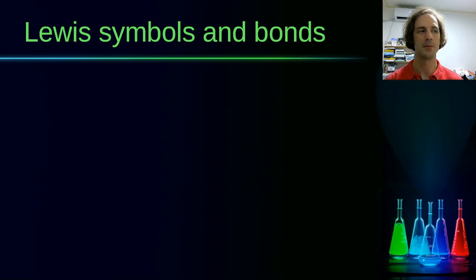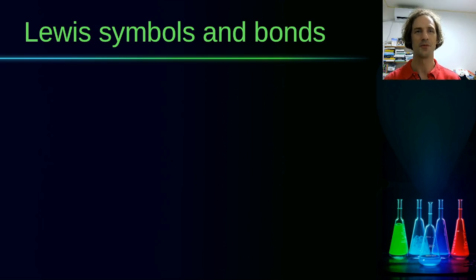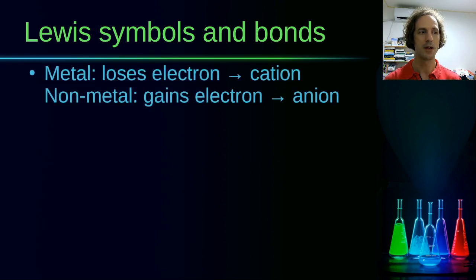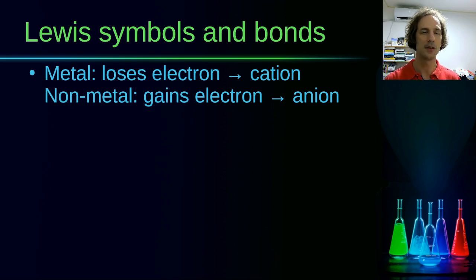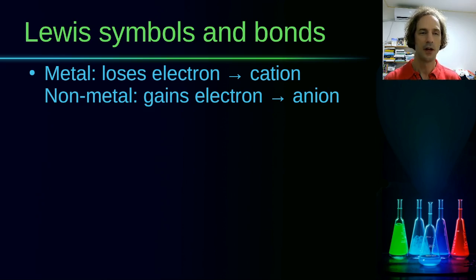Previously we discussed the Lewis symbols, the valence electrons, and bonds in terms of ionic bonding, where a metal atom will lose one or more electrons and become a cation, and a non-metal atom will gain electrons and become a negatively charged ion, an anion.